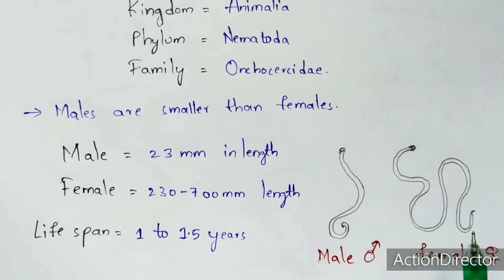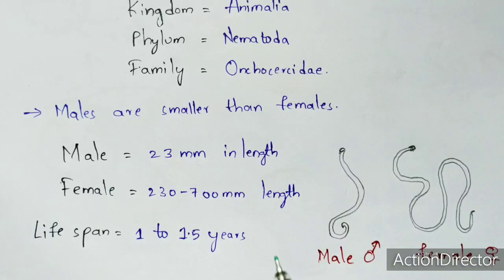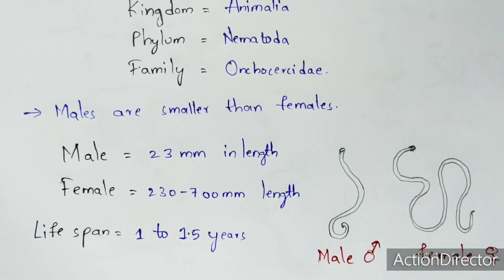The structures of the male and female worms can be seen under various types of microscopes, such as fluorescent, bright field, or dark field microscopes. Now let us discuss the life cycle of Onchocerca volvulus, which causes onchocerciasis.